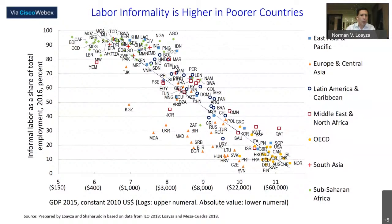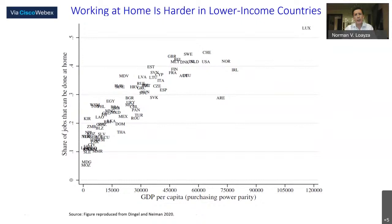With some of the poorest countries having an informal labor share of total employment above 90 percent, the ability to work from home is much harder in lower-income countries. According to a paper by Dingel and Neiman (2020), the share of jobs that can be done at home for advanced countries is 35 to 45 percent, while for developing countries it is only 5 to 25 percent — clearly related to informality.